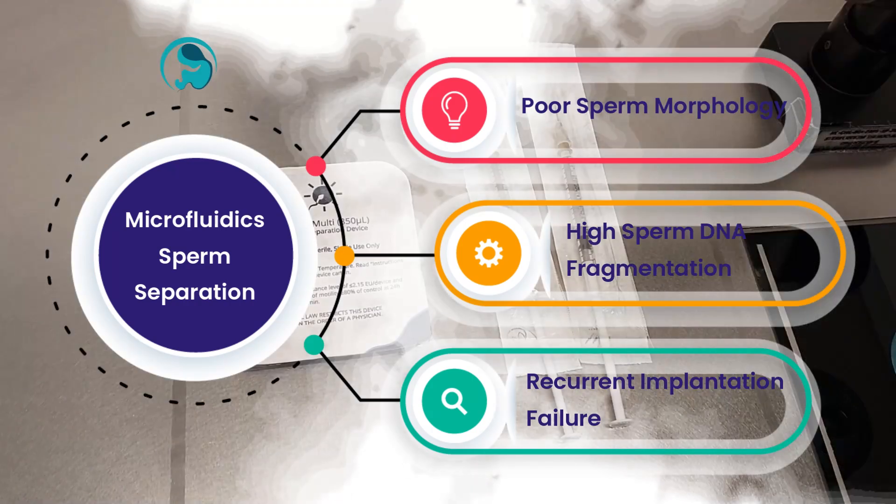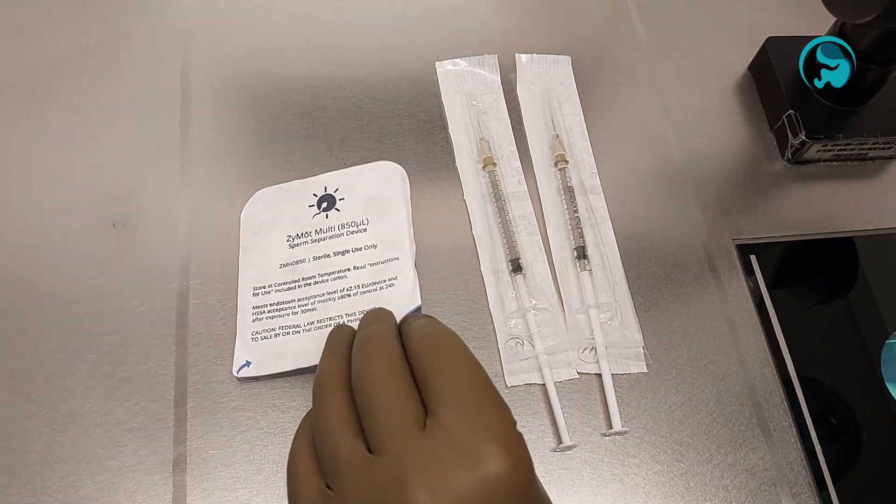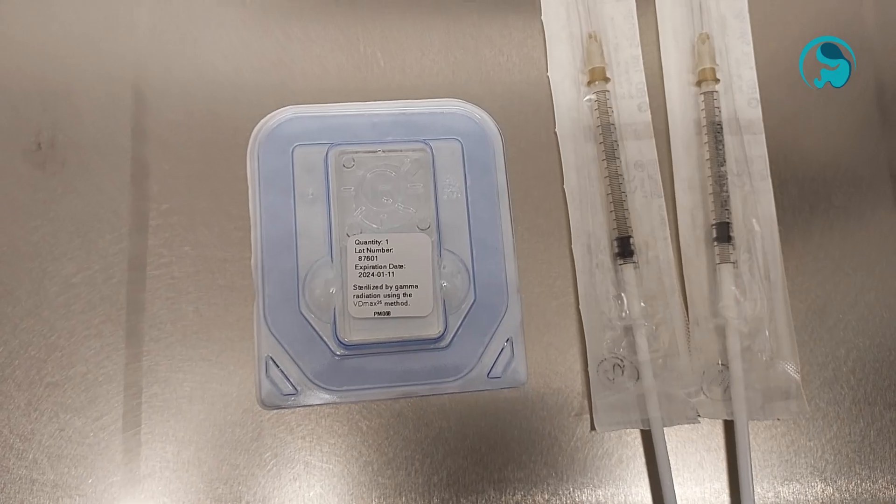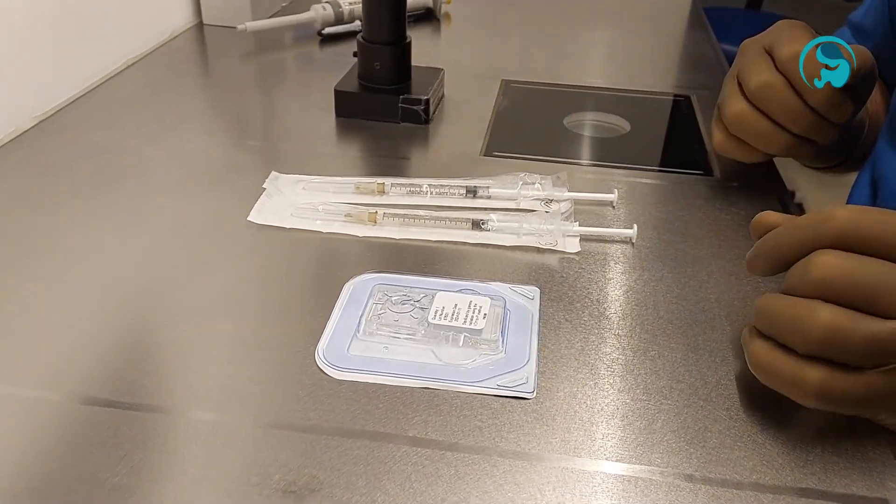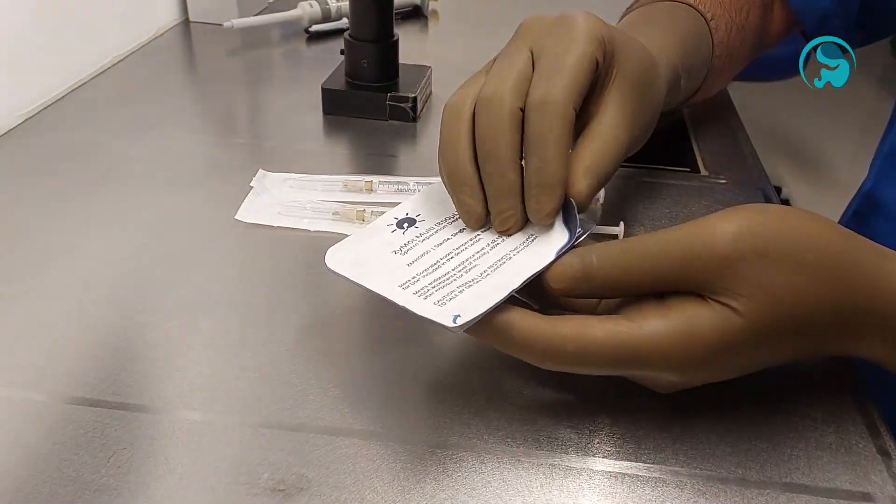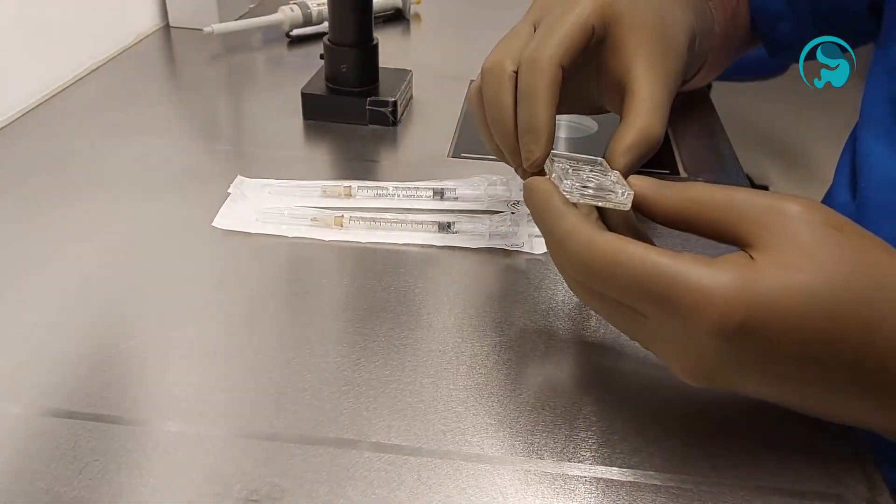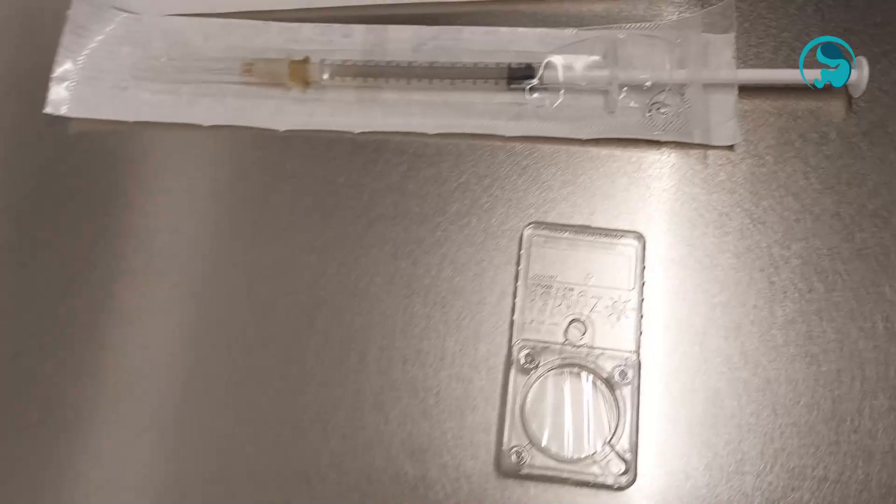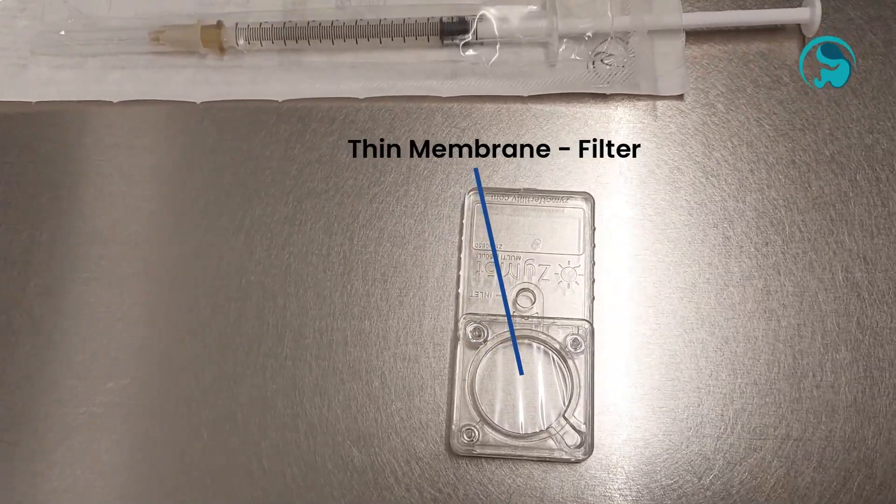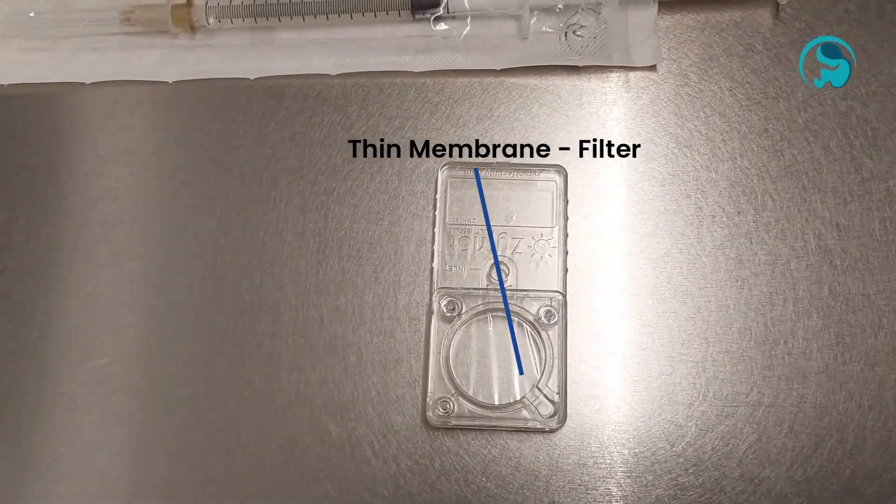Let us see a demonstration of how microfluidic chips like Zymote are used for sperm selection in an IVF lab. This microfluidic chip has a very thin membrane that acts as a filter, allowing only the highly motile and morphologically normal sperms to swim through it.